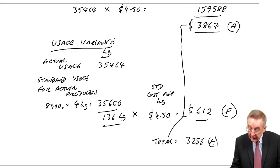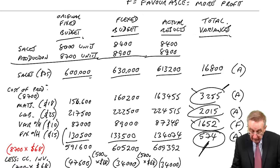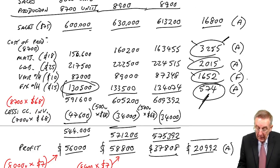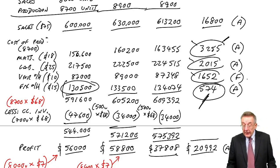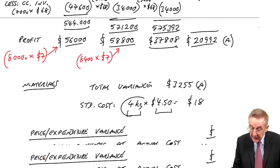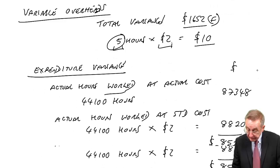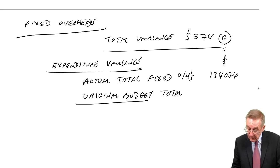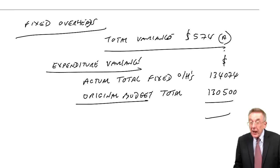So we compare with the original budget total. And if you look back, the original budget, we'd budgeted on spending $130,500. Now, I'm sorry about this up and down, but I've not much choice here. And so, whatever else happened,